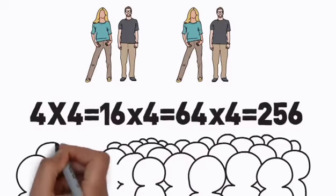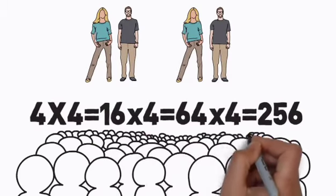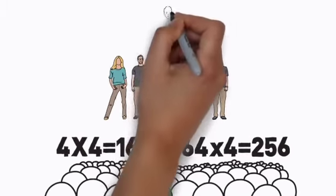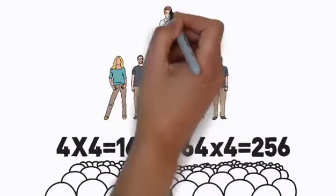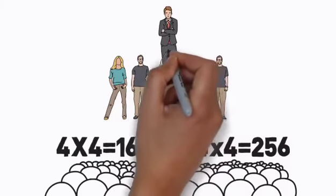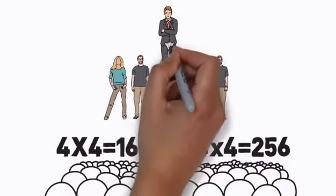So remember, you only found four, but your total team is 256. That means you're getting paid for the efforts of 256 people, not just your four. This is your residual income and works for you while you sleep.